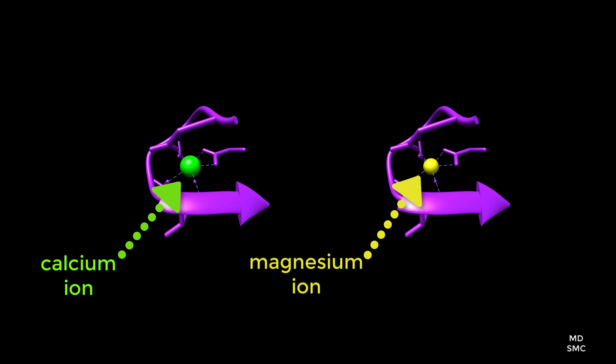This size difference contributes to the selectivity of calmodulin for calcium. Because calcium ions are larger in size, the ligands are spaced farther apart.